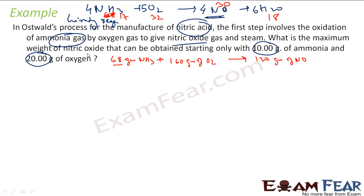So now if you see, I have how many grams of ammonia? 10 grams. If 68 grams of ammonia needs 160 grams of oxygen, then 10 grams of ammonia will need 160 by 68 into 10 oxygen. And that is less than 23.52 grams of oxygen. So to consume all 10 grams of ammonia, we need 23 grams of oxygen. But how much oxygen I have? Only 20 grams. That means oxygen is a limiting reagent. Oxygen will get consumed first.